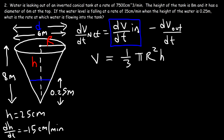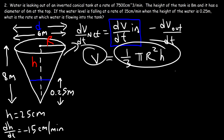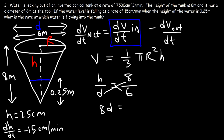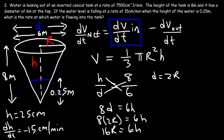We don't have dr/dt, so we can't differentiate the volume formula in this form — we need to replace r with h. Using a ratio between the tank's height and diameter: height 8 meters to diameter 6 meters. Cross-multiplying gives 8d equals 6h. Since d equals 2r, we have 16r equals 6h. Dividing both sides by 16 gives r equals 6h/16, and simplifying by dividing by 2 gives r equals 3h/8.